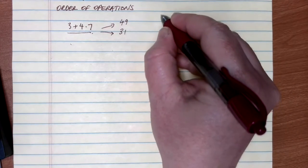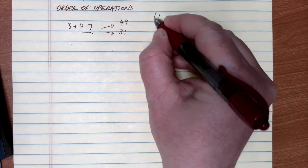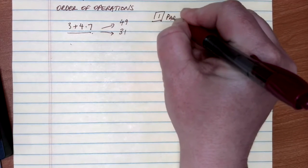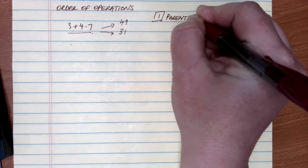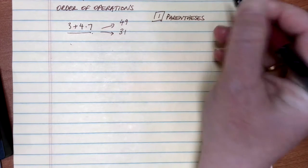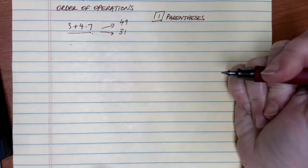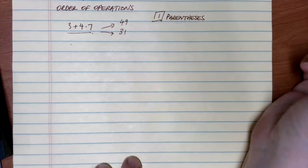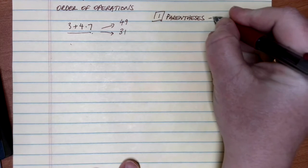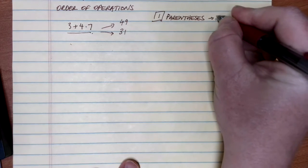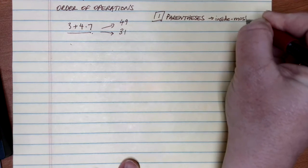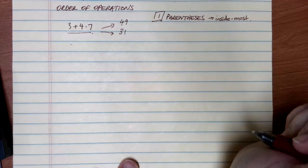When doing the order of operations, the first thing we always need to look for is if there are any parentheses in the problem. If there are, anything in the parentheses has to be done first. Sometimes there's more than one set of parentheses — you always want to start with the innermost parentheses first and then work your way out.